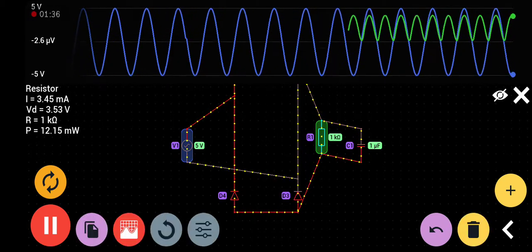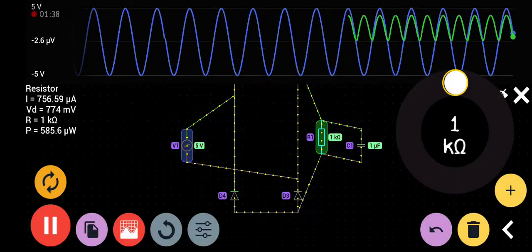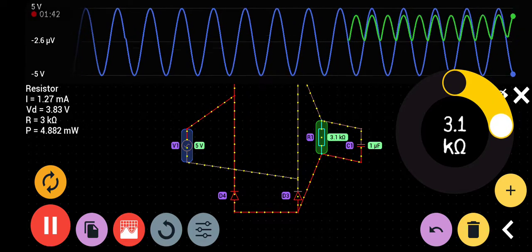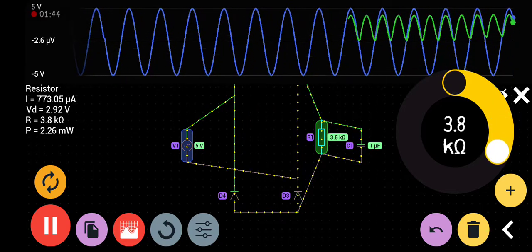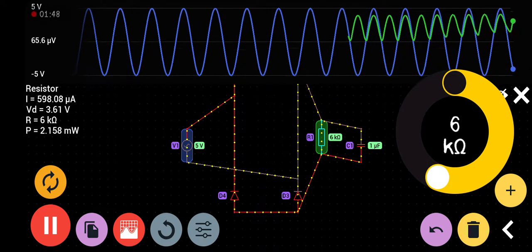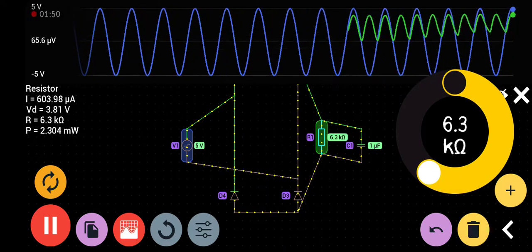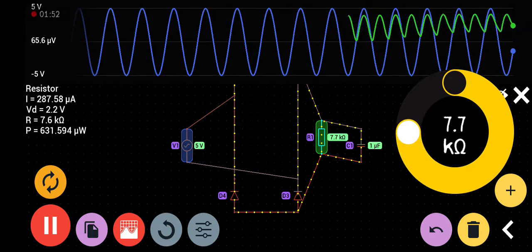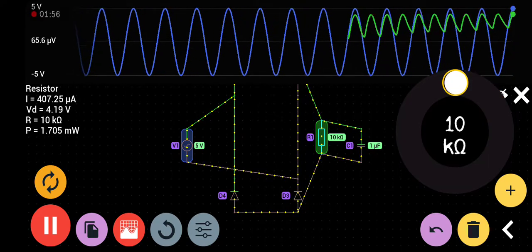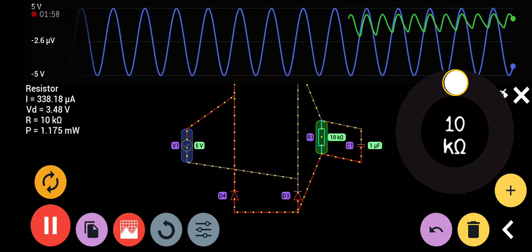This is 1 kilo-ohm. Now we are increasing the resistance. If we increase the resistance, you can see the ripples are reducing. If we make it 10 kilo-ohm, you can